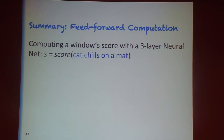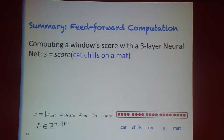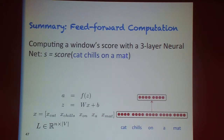To summarize: to compute the score with this three-layer neural network, we take the words, do the lookup to get the neural representation of the word subsequence, run it through a single neural network layer to get an output, multiply the output by another vector, and that gives us the score.